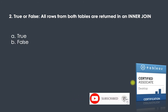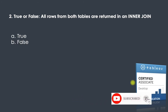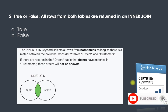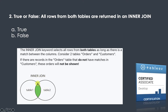True or false: all rows from both tables are returned in an inner join. Basically, the inner join keyword selects all rows from both tables as long as there is a match between the columns. So if there are two tables, Table 1 and Table 2, an inner join will pick all records as long as there is a match between the two tables.